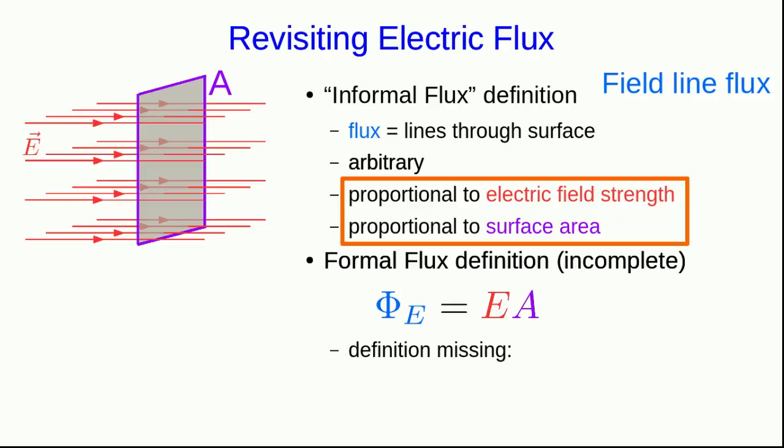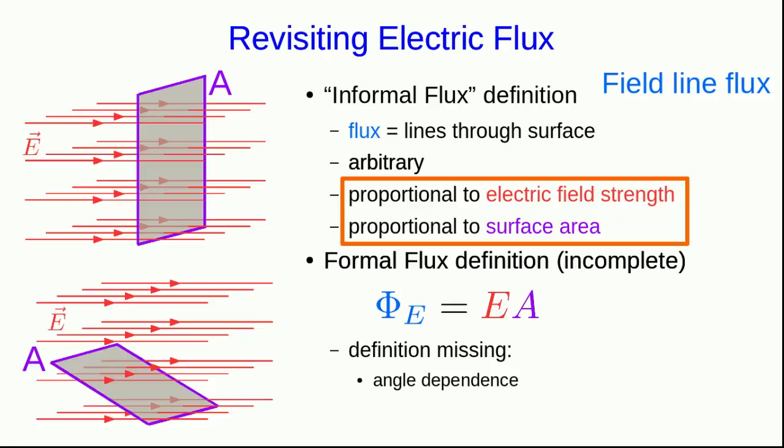But that's missing a couple of things that we know it needs. For one thing, we know that if we take the same surface and tip it relative to the E field, so it's no longer perpendicular, then the flux decreases.